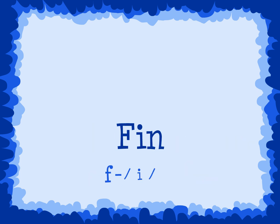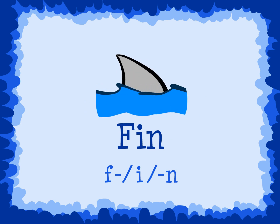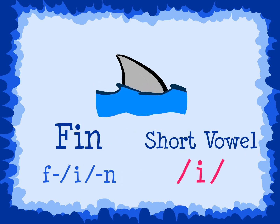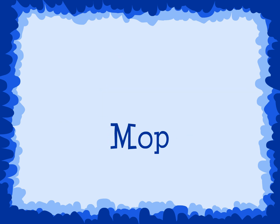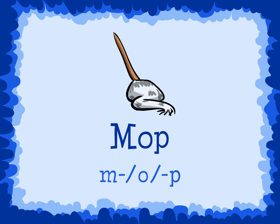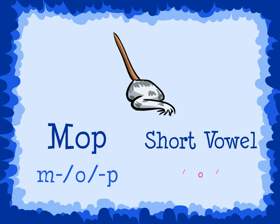'Fin.' Fin is spelled F, I, N, but each letter is pronounced F, I, N. The short I sound, I, is said in the word 'fin.' Another example is 'mop.' Mop is spelled M, O, P. The letters in the word 'mop' make these sounds: M, A, P. The short O sound, A, is said in the word 'mop.'